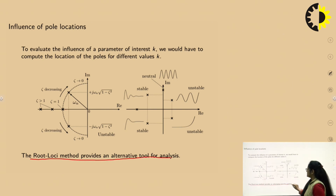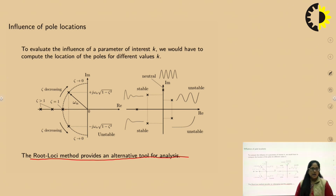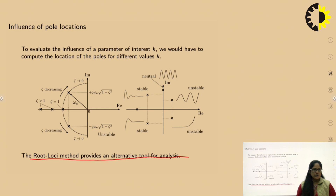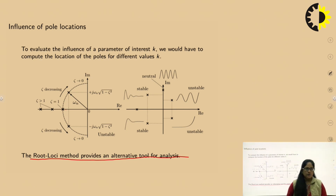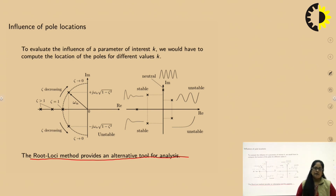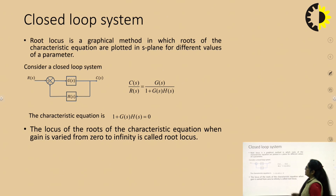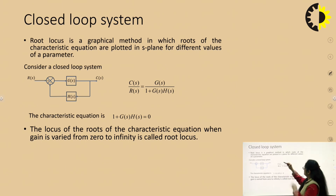The root locus method provides an alternative tool for analysis. To evaluate the influence of a parameter of interest K, we would have to compute the location of poles for different values of K — for example, as the mass of the aircraft changes. Computing stability for each changing mass is not a correct approach. The root locus method gives us an alternative to determine the stability and transient response of the system. The root locus is a graphical method in which the roots of the characteristic equation are plotted in the S-plane for different values of a parameter.